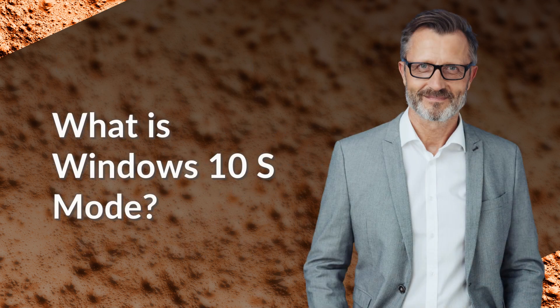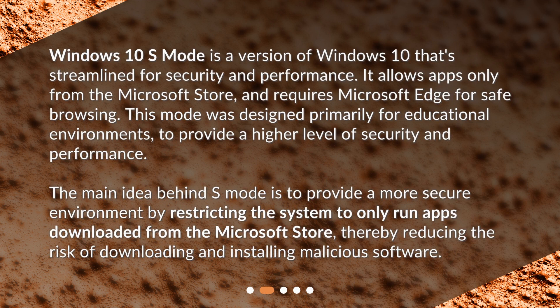Windows 10 S-Mode is a version of Windows 10 that's streamlined for security and performance. It allows apps only from the Microsoft Store and requires Microsoft Edge for safe browsing. This mode was designed primarily for educational environments to provide a higher level of security and performance. The main idea behind S-Mode is to provide a more secure environment by restricting the system to only run apps downloaded from the Microsoft Store, thereby reducing the risk of downloading and installing malicious software.